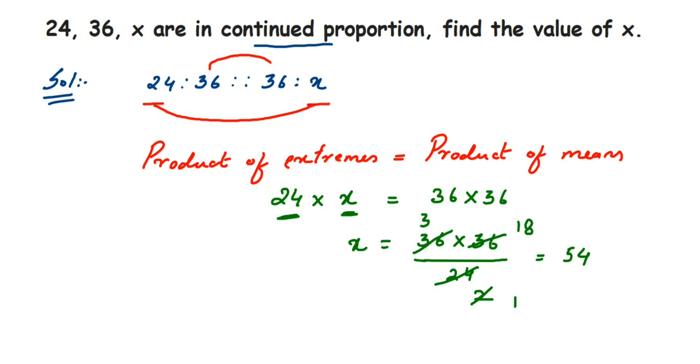Therefore, x is equal to 54. That's it. I hope this question is clear. Remember, continued proportion means you have to write down the ratios in this way and apply the formula that product of extremes is equal to product of means and get the value of x. I hope this question is clear. In case you have any further questions or doubts, you can drop a comment. Thank you so much for watching.